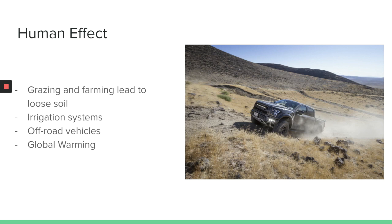Agriculture has significantly impacted desert environments. Farming and the grazing of cattle have left the sandy, loose soil vulnerable to wind erosion. In populated areas, large parts of desert lands have been lost due to the installation of irrigation systems, which provide the soil with water, enabling more plant growth, increasing agriculture, and ultimately killing off the land. Off-road vehicles not only kill small desert shrubs but can cause irreversible damage to the habitat. Humans have also caused global warming, which has increased drought in deserts, decreasing the already scarce water these plants depend on, and raising the risk of wildfires.